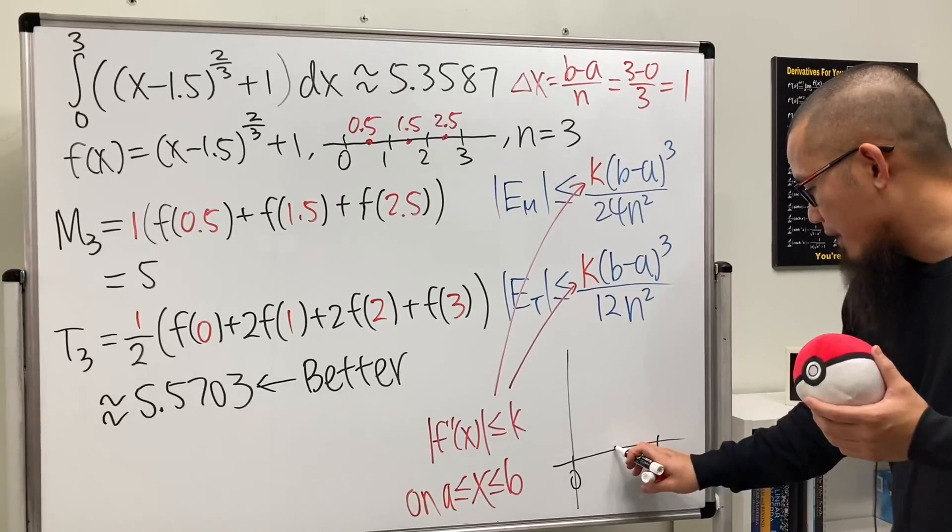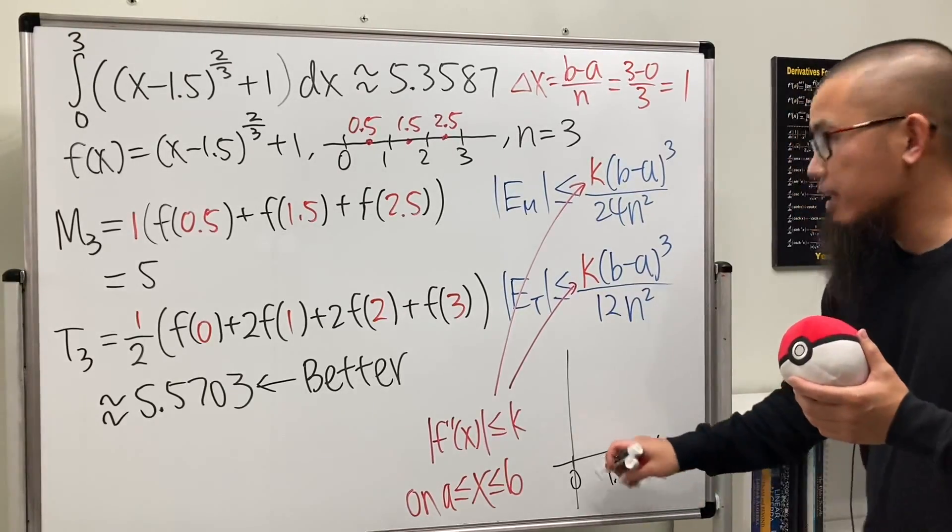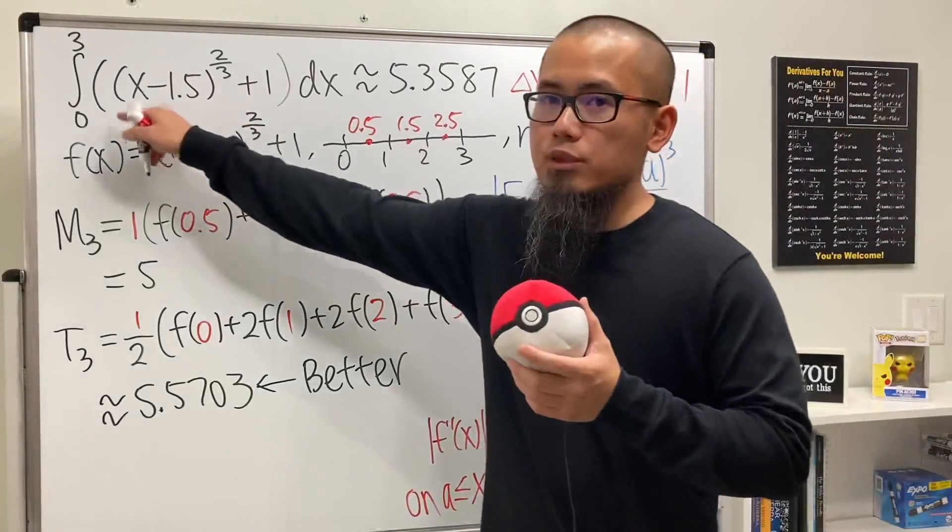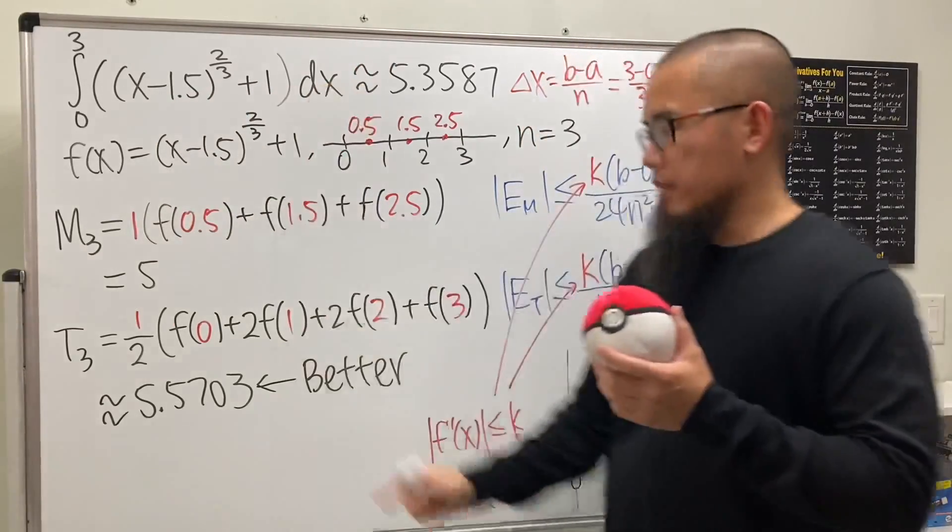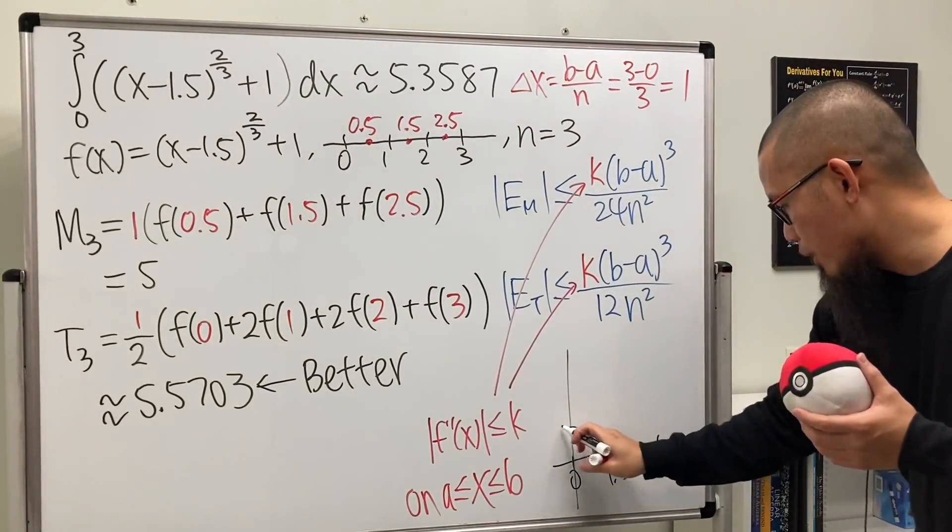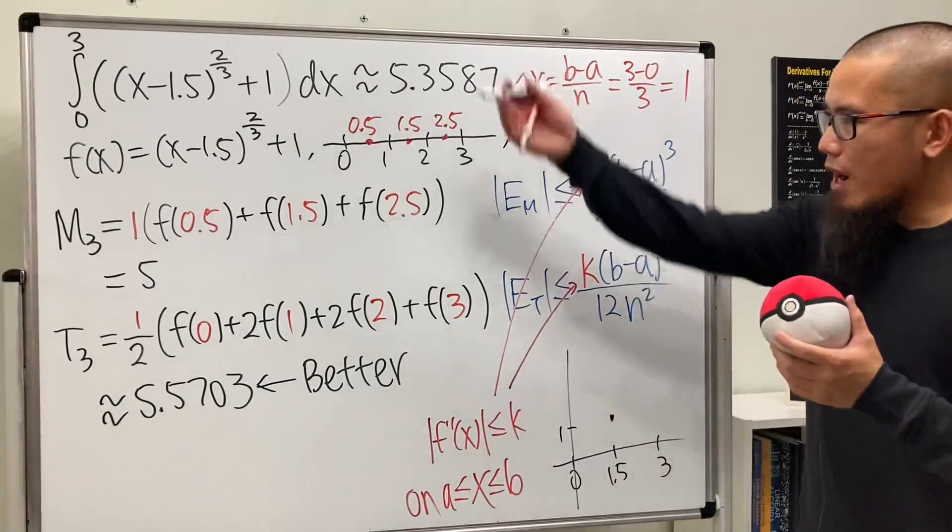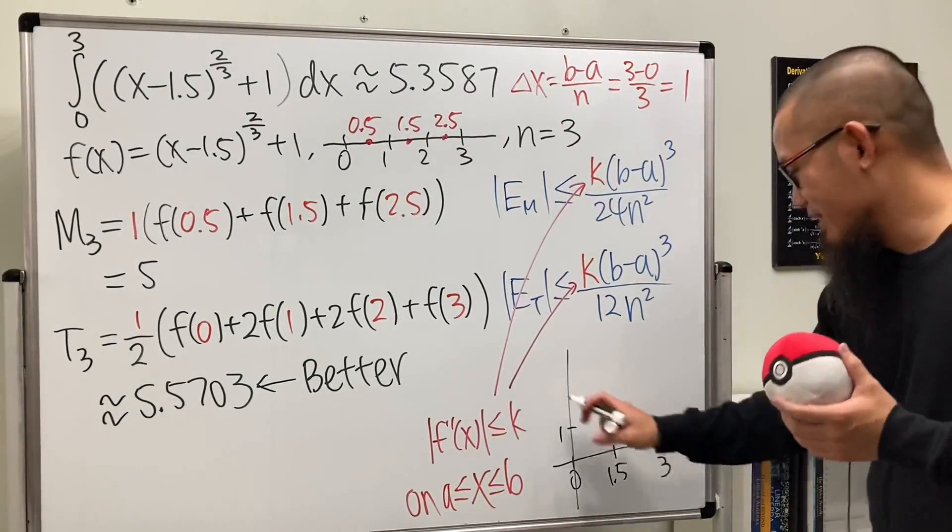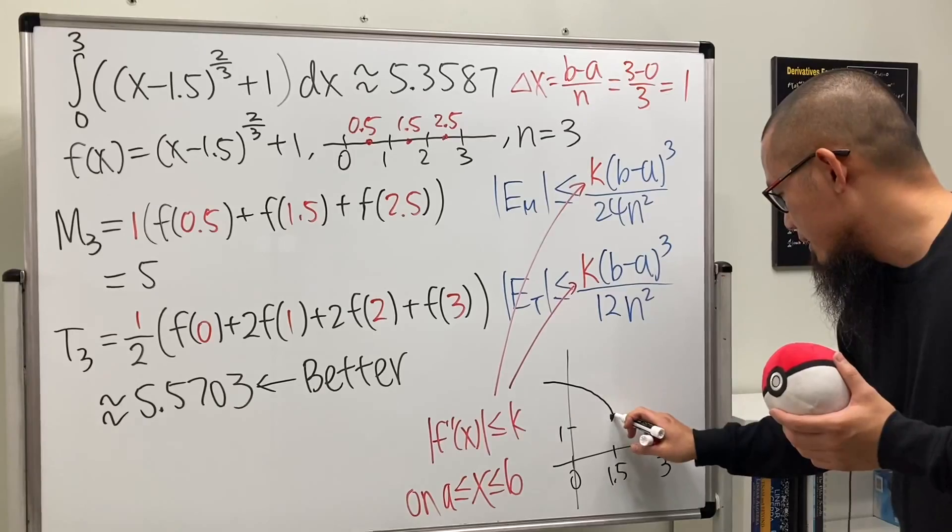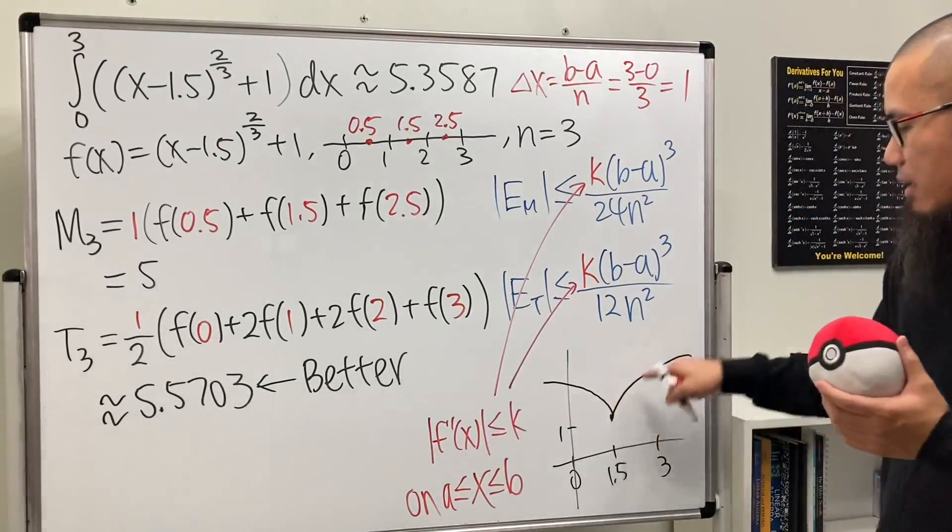Here you have 0 and here you have 3. 1.5 is in the middle. If you plug in 1.5 into x, you just get 1, so you have a nice point right here. The graph looks like a bird.